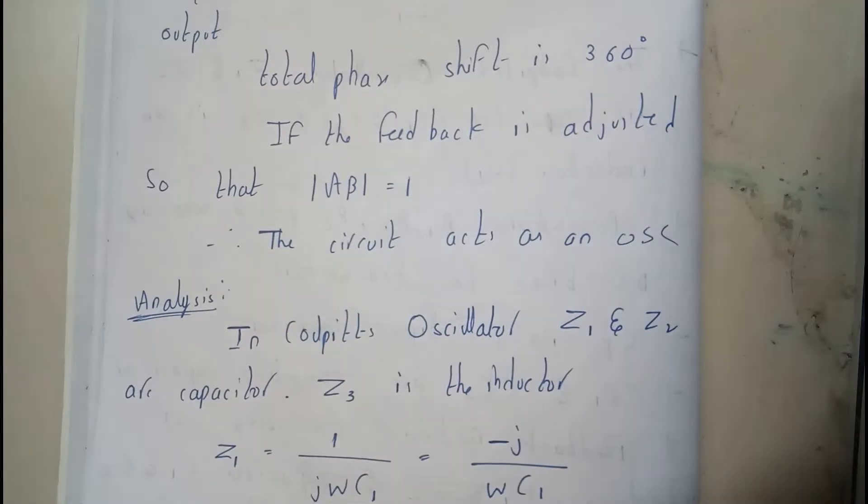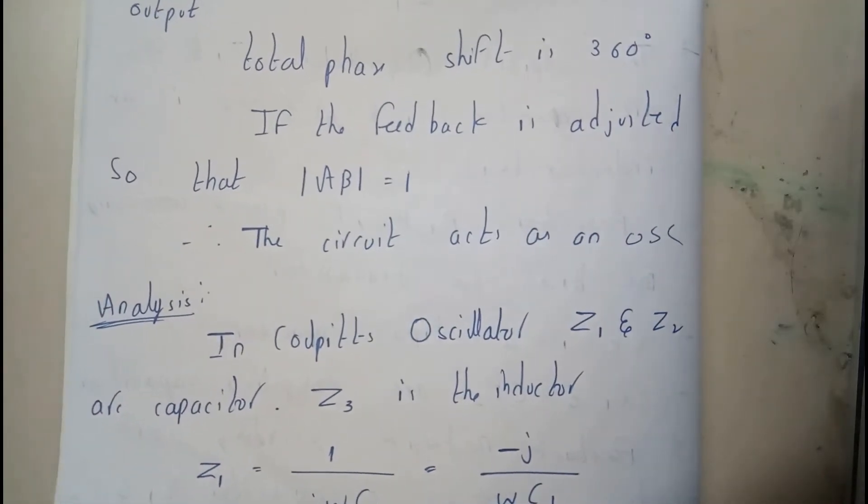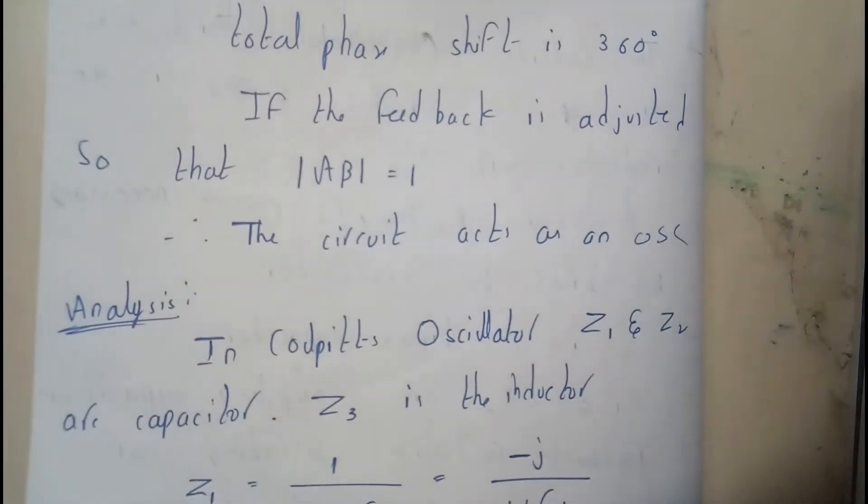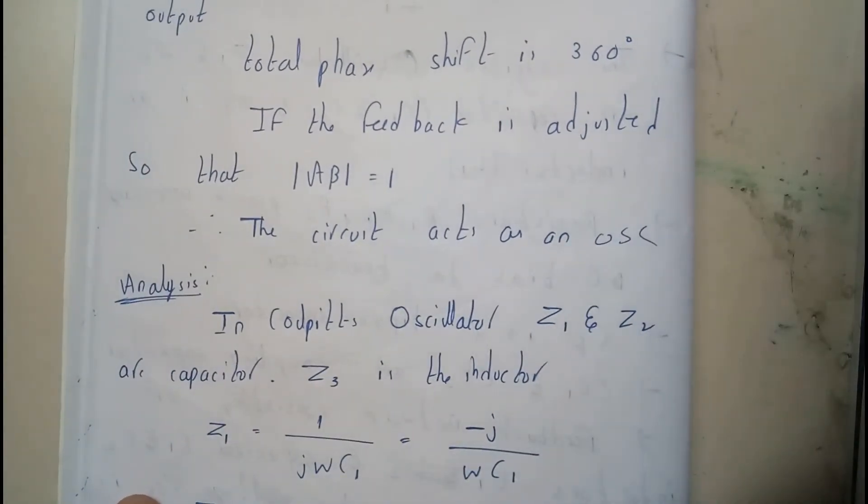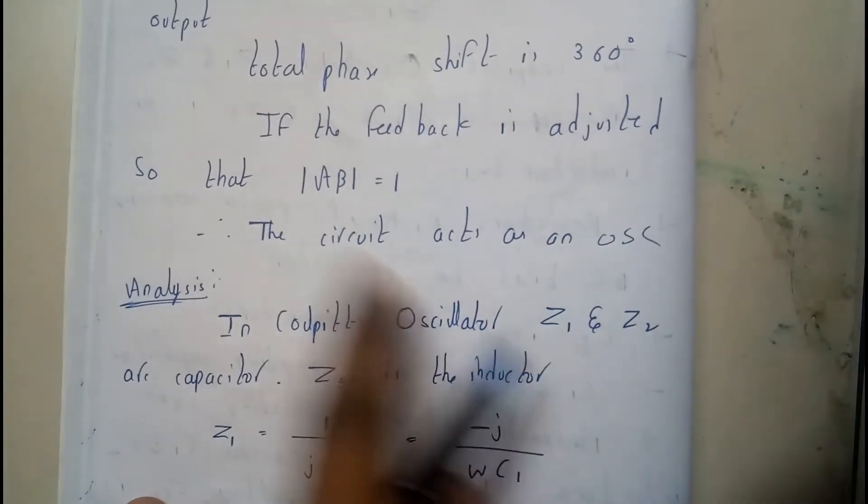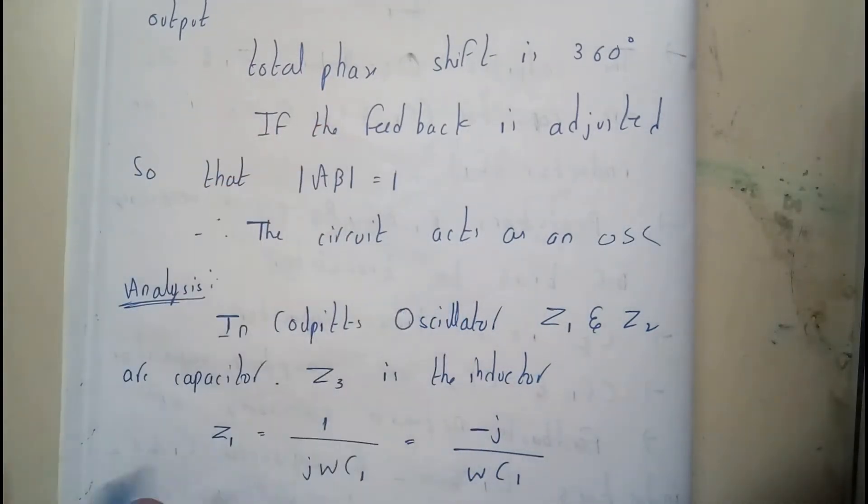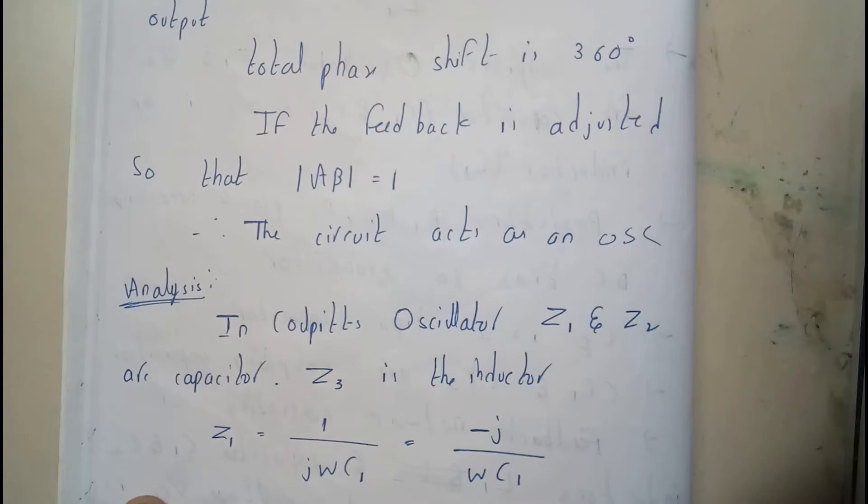So now let us try to analyze the equation for the same process for the Colpitt's oscillator. This is also the same process, but I have told you one thing here, there is only a single inductor. So there will be no mutual inductance. Remember guys, that's the most important thing. If you write it, you are going to screw the whole theorem.